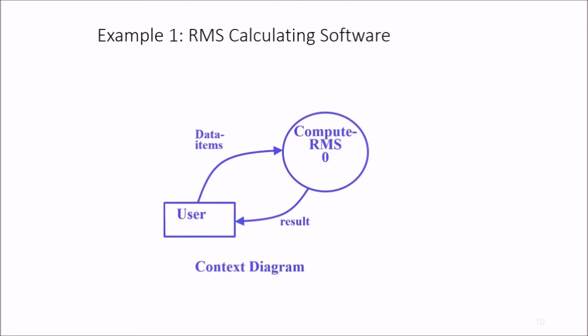The context diagram level 0 is simple to develop. The system accepts 3 integers from the user and returns the result. We have users, the function compute RMS, data flow, and result displayed to the user.